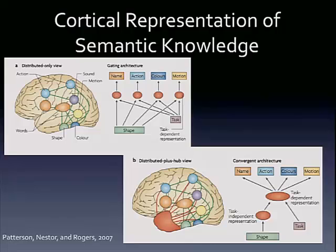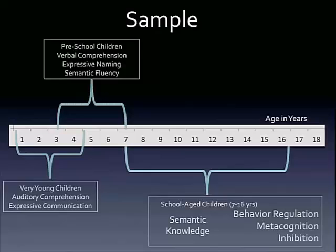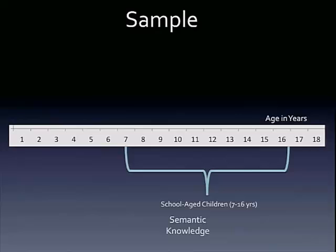Patterson argued that semantic dementia, which is primarily localized to the anterior temporal lobe, may give us some information about where this semantic hub exists. This is our total sample, and we'll be looking at school-aged children, ages 7 to 16, on the semantic knowledge factor and how that relates to brain maturation. This sample includes 136 children, ages 7 to 16, with a mean age of 11.7, about half female, and a majority right-handed.